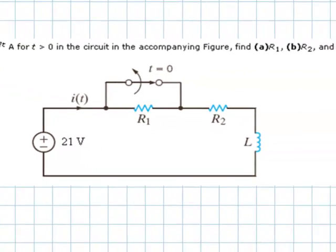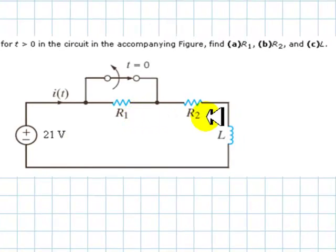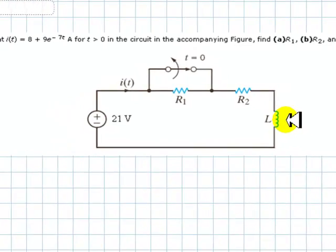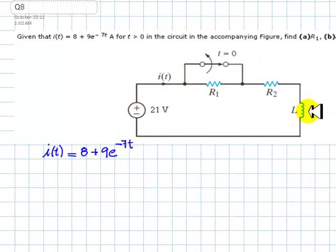The question is find R1, R2, and how are we going to do that? From that expression we know that the current value at t equals 0. When this is 0 the exponential is 1.